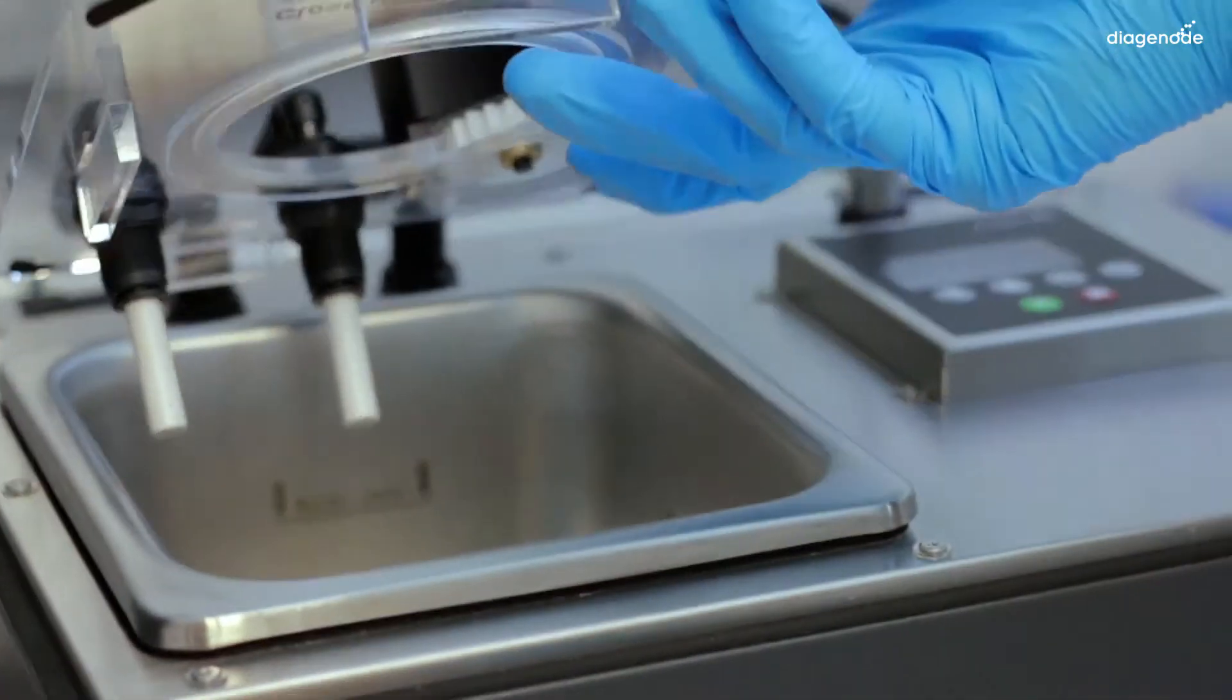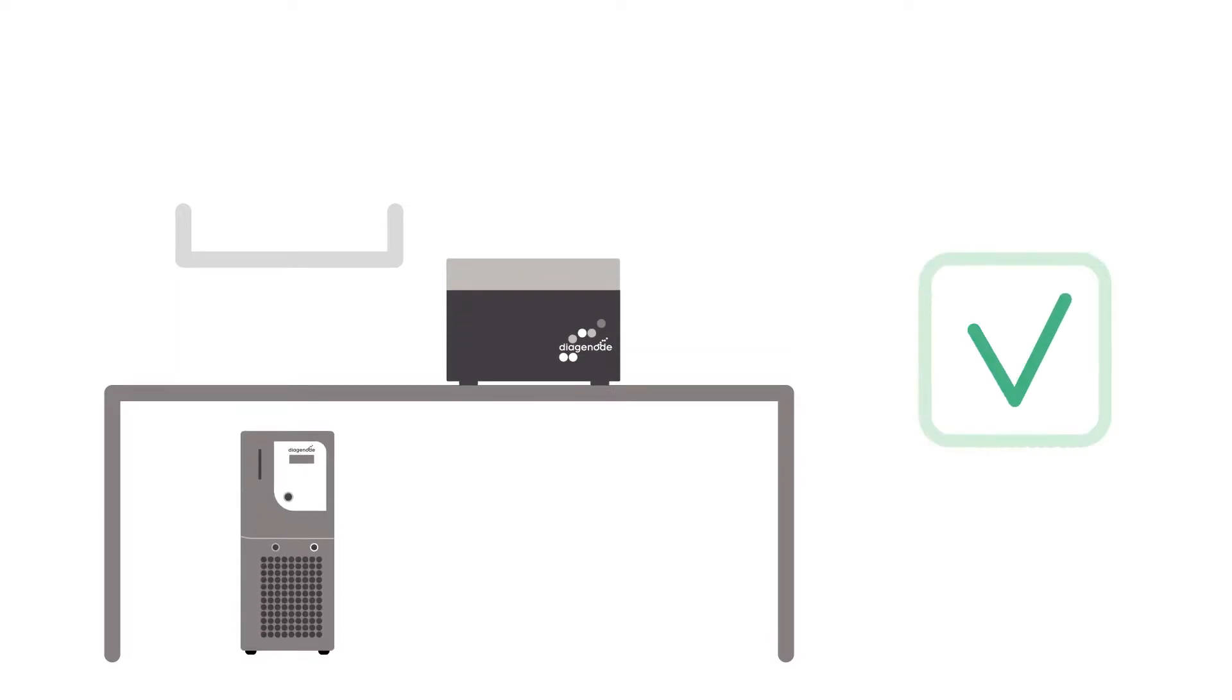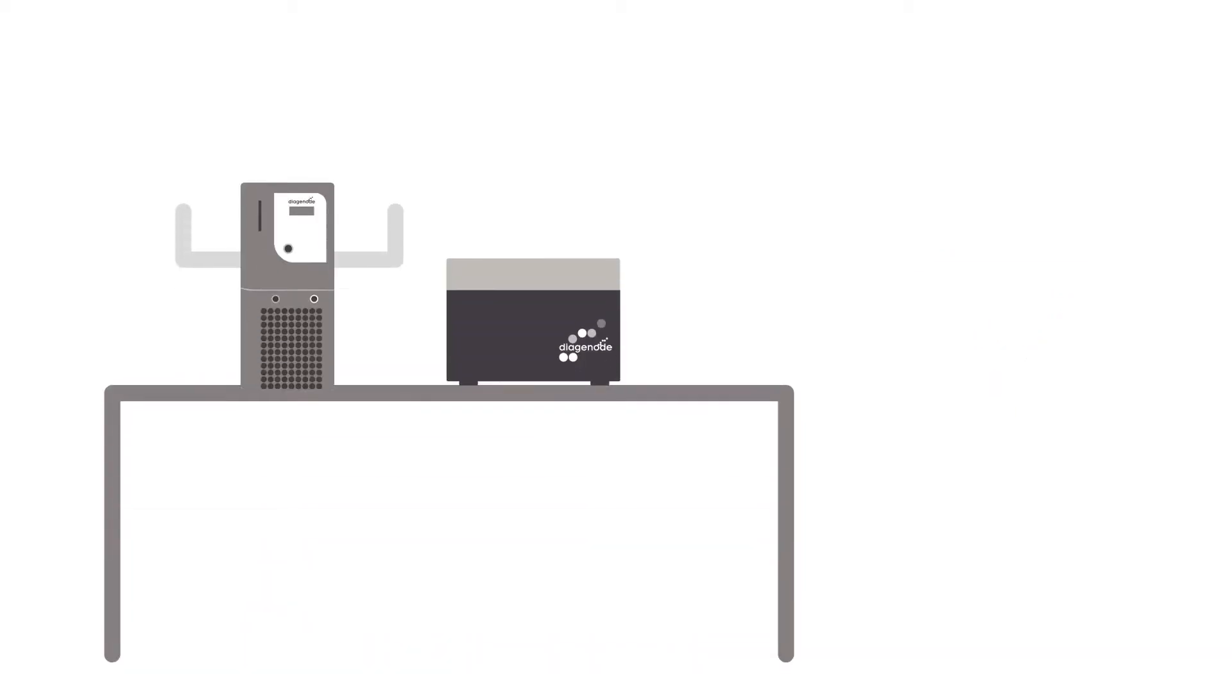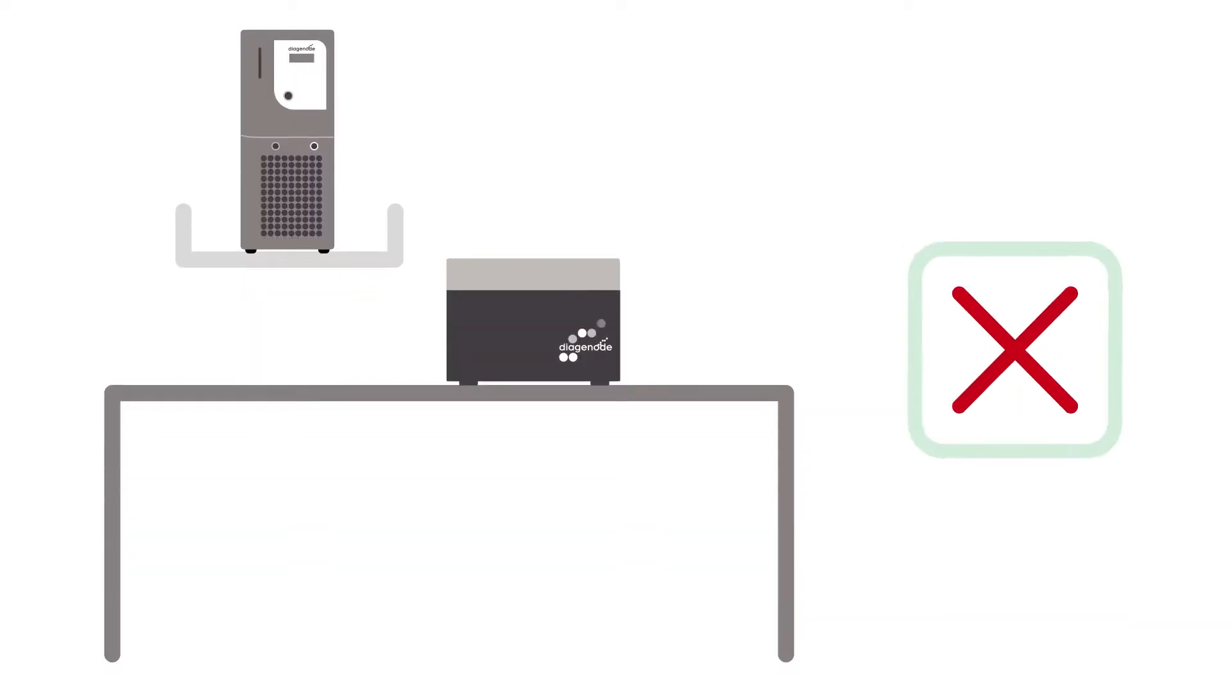Place the BioRuptor on a bench or another level surface, and place the cooler below the BioRuptor. You can place this chiller at the same level of the BioRuptor because it contains a special valve system which avoids overflow. But never place it higher than your BioRuptor.